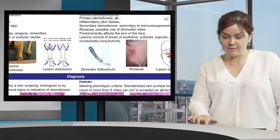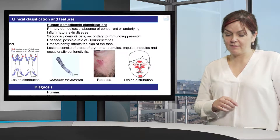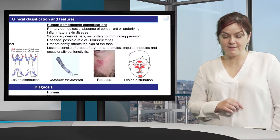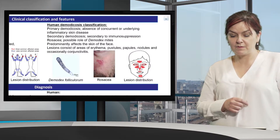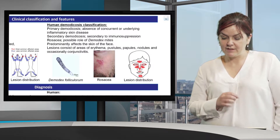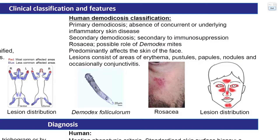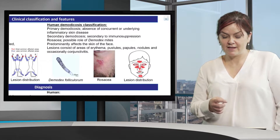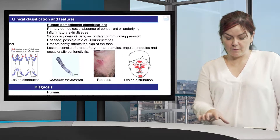In comparison to humans, looking at the classification: primary demodexosis is where there is an absence of current or underlying inflammatory diseases, and secondary demodexosis is where demodexosis has occurred secondary to immunosuppression. In rosacea, there is a possible role for demodex mites. Demodex predominantly lives in the facial skin, and so the disease generally causes lesions there. Lesions consist of areas of erythema, pustules, papules, nodules, and occasionally conjunctivitis — similar to what we see in dogs.